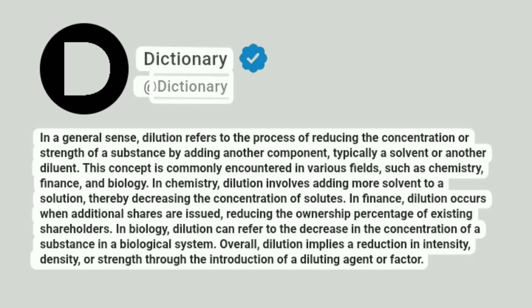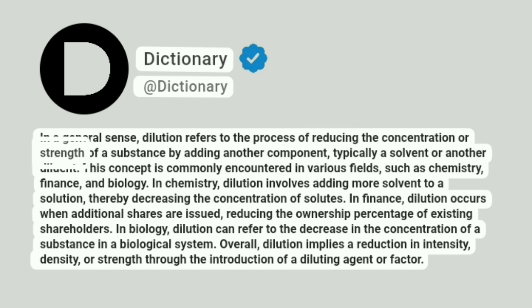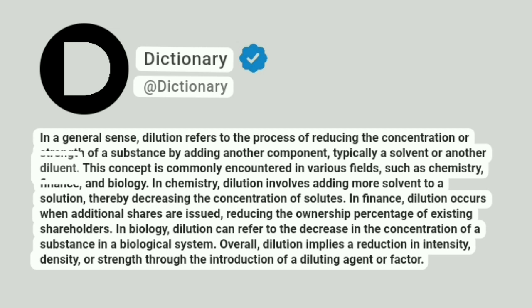Dictionary. Addictionary. In a general sense, dilution refers to the process of reducing the concentration or strength of a substance by adding another component, typically a solvent or another diluent.